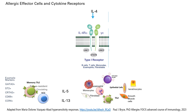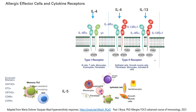The interleukin-4 receptor alpha chain can also be associated in other cells with the interleukin-13 receptor alpha 1 chain. This associated receptor can respond to both interleukin-4 and interleukin-13. Cells that bear this type of receptor will respond to both, activating and phosphorylating the Janus kinases and the appropriate STATs intracellularly to produce the response. This is a type 2 receptor.